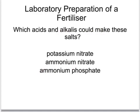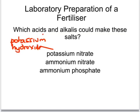If we were going to make some other fertilisers, let's think about which acids and alkalis we could use. If we were making potassium nitrate, the potassium part would come from potassium hydroxide, whereas the nitrate part would come from nitric acid.